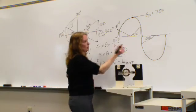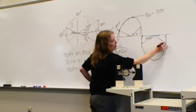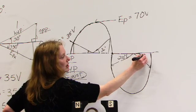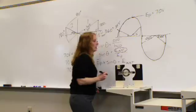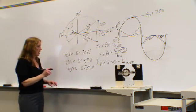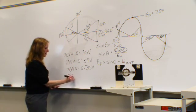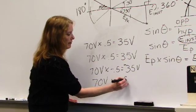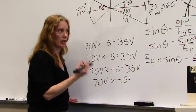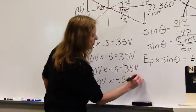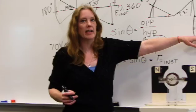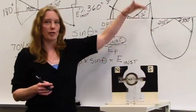Taking our formula instantaneous, we have 70 volts peak times a negative 0.5 at 330 degrees would give me a negative 35 volts. And as we can see, we are in the negative portion of our alternation.